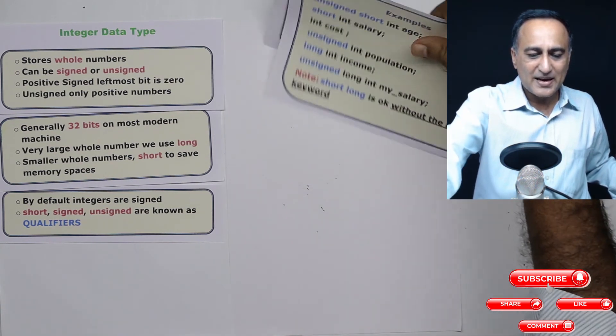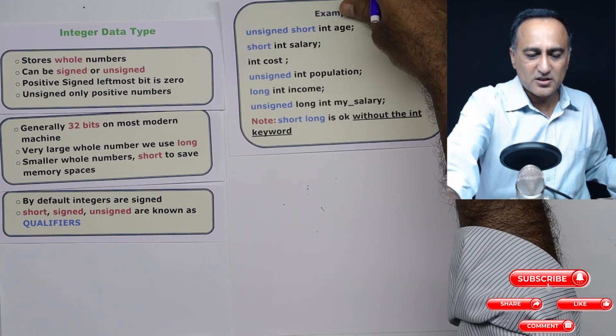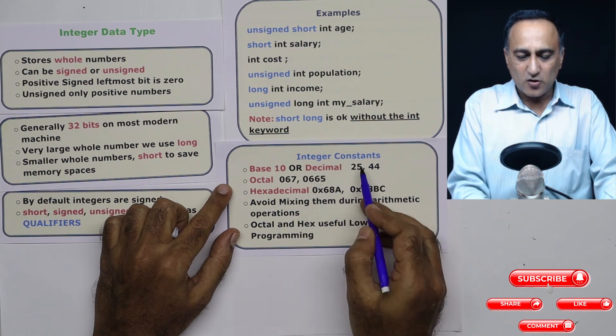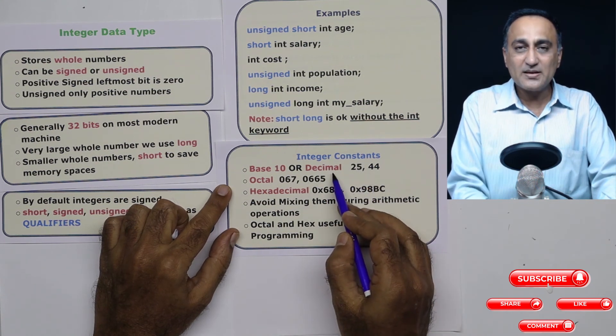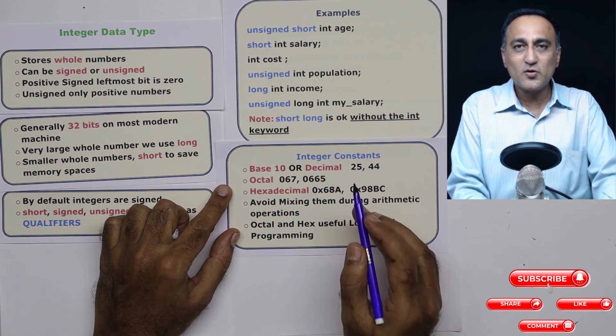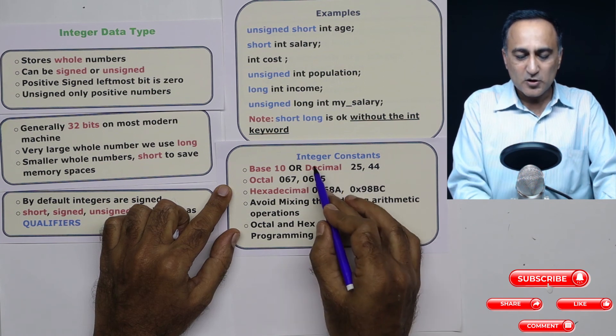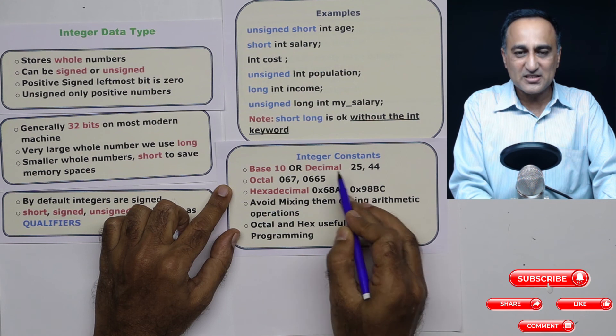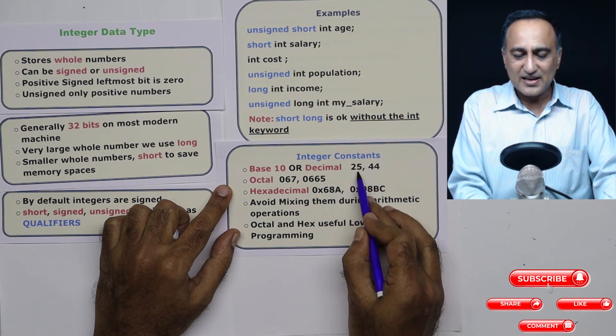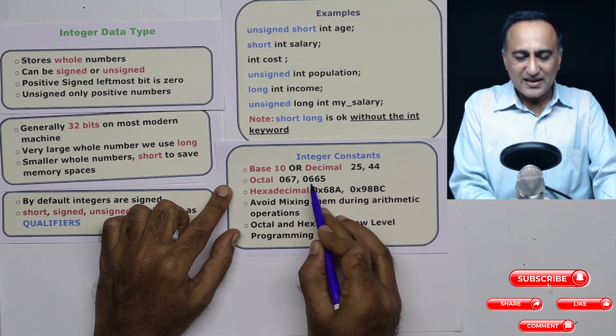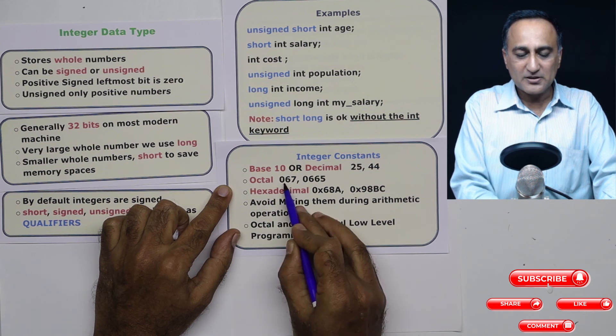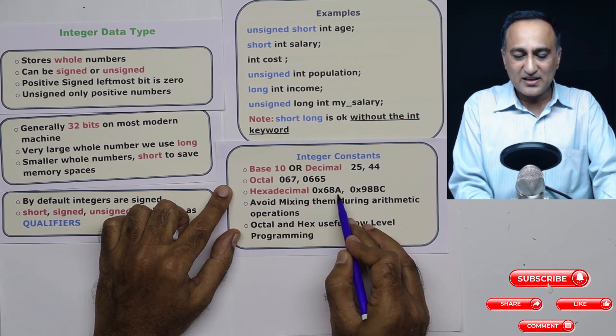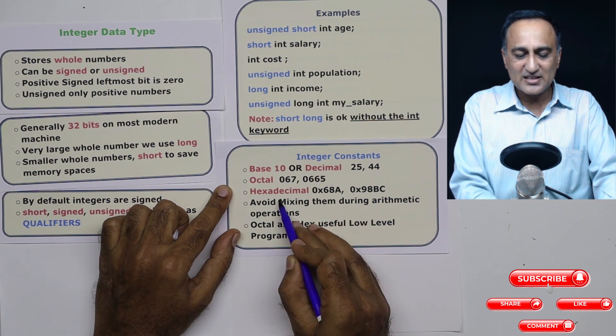Now to give you some examples of decimal constants or decimal integer constants or integer constants. The reason we are calling them decimal is because base 10 is also referred to as a decimal system. So if I have to refer to decimal integer constants or integer constants in the base 10 representation, these are examples. These are examples of octal numbers. If I precede anything with a 0 it is an octal number. If I precede an integer with 0x it's a hexadecimal number.